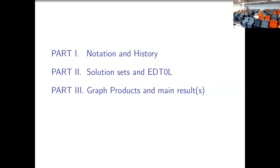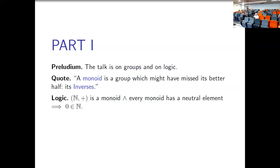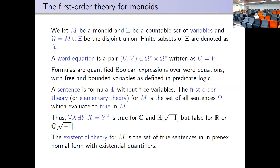This is a talk on groups and logic. A monoid — I think this is a quote by Paul Schupp, who quoted somebody else — is a group which might have missed its better parts, i.e., its inverses. The logic we have here is that sometimes it's important: (ℕ, +) is a monoid, every monoid has a neutral element, and therefore zero is a natural number. That's debatable, but of course it's very natural.